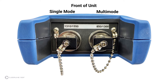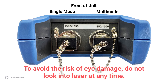The light source has two labeled outputs. The 1310 or 1550 nanometer output is used for single-mode OS2 testing, and the 850 or 1300 nanometer output is used for multi-mode testing. Note that the laser does not operate at visible wavelengths — light will not be visible when the laser is active. To avoid the risk of eye damage, do not look into the laser at any time.